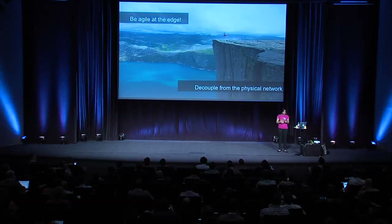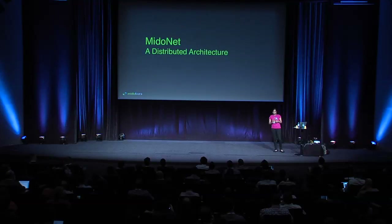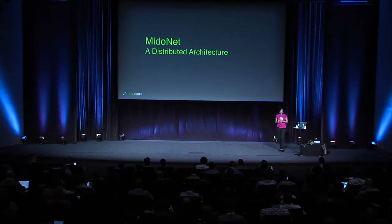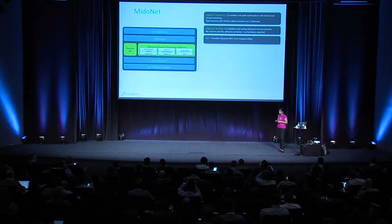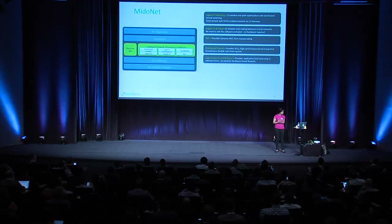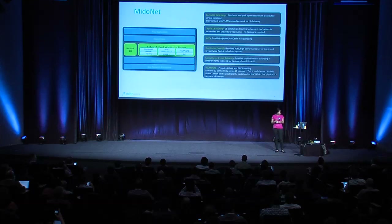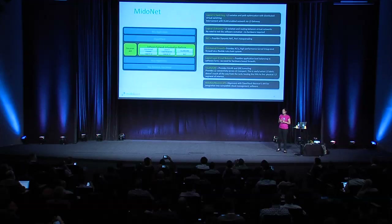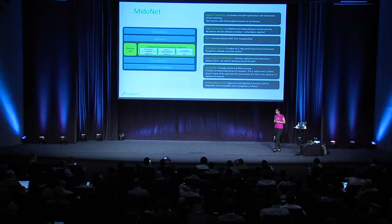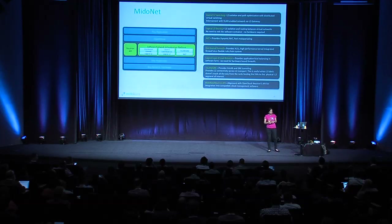Let's be agile at the edge — let's decouple ourselves from the physical network. MitoNet is a product created by Mito Cura, and it is an example of a distributed architecture. MitoNet is a network virtualization overlay implementing layer two logical switching, layer three routing, stateful and stateless NAT, distributed firewalls, and logical layer four load balancing. We implement that with VXLAN or GRE tunneling as our overlay technology, and we work with OpenStack Neutron's API — essentially a Neutron plugin. We've been involved with OpenStack since the B release, and from day one we implemented a distributed architecture: high availability, built ready to scale out for clouds and OpenStack.